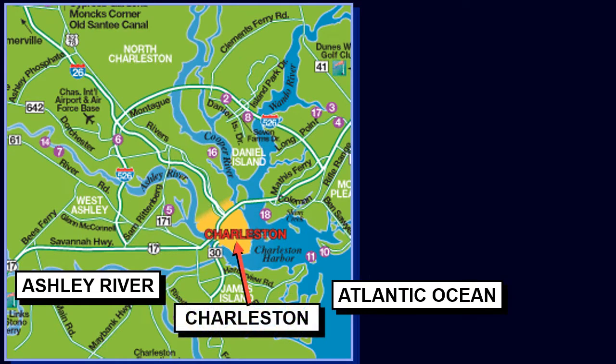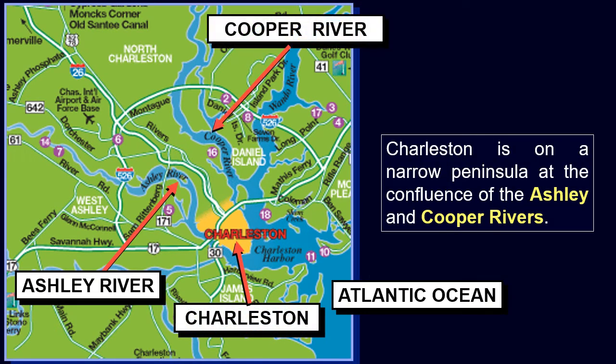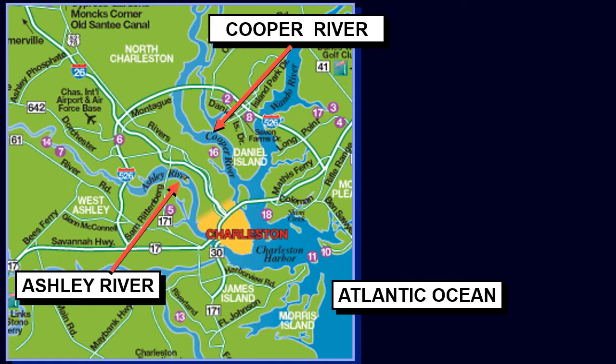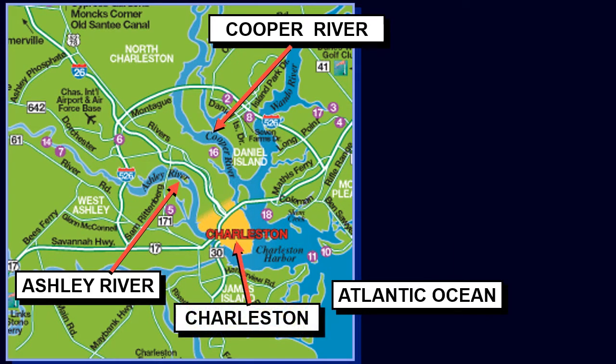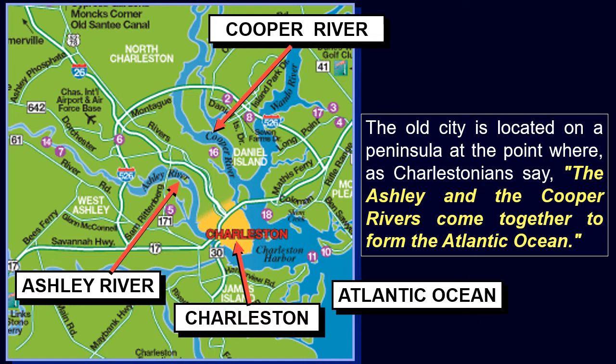Charleston is on a narrow peninsula at the confluence of the Ashley and Cooper Rivers. The old city is located on a peninsula at the point where, as Charlestonians say, the Ashley and the Cooper Rivers come together to form the Atlantic Ocean. The entire peninsula is very low. Some of it is landfill material, and as such, it frequently floods during heavy rains, storm surges, and unusually high tides.